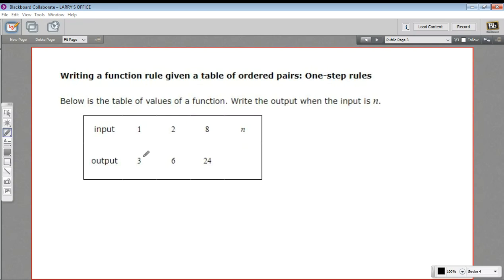In this problem, we're being asked to look at some ordered pairs, an input and an output, an input and another output, an input and another output, and then figure out what the rule is for this function.